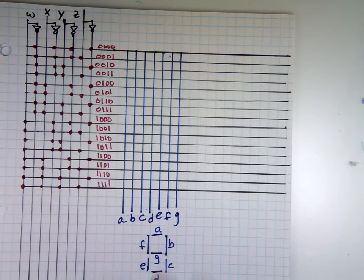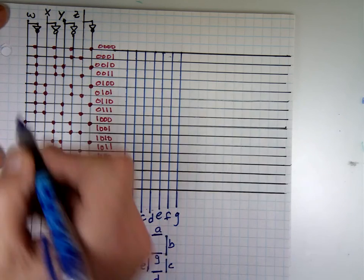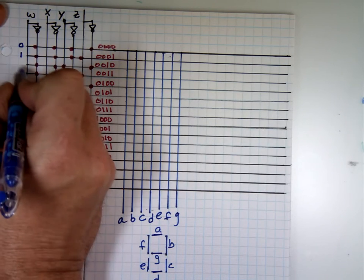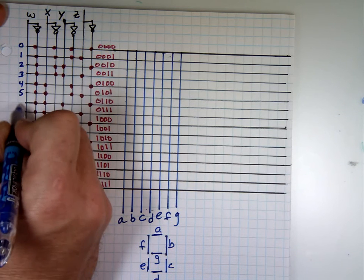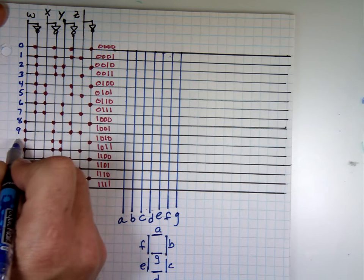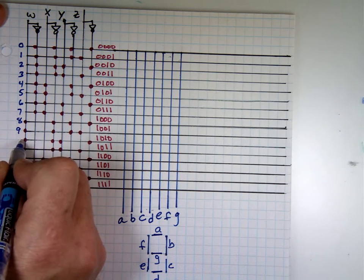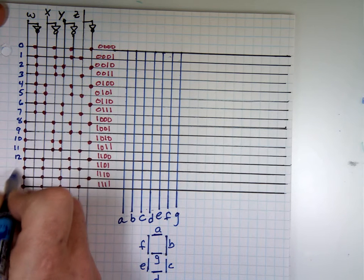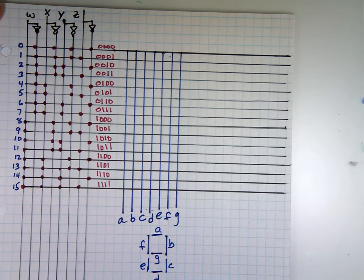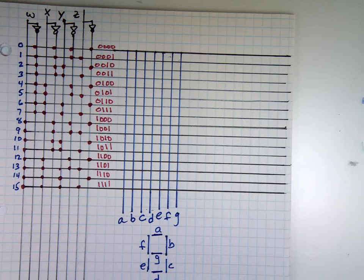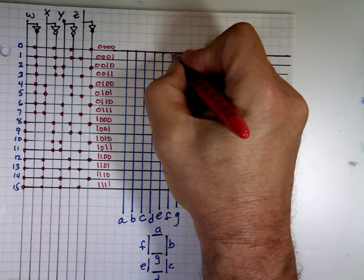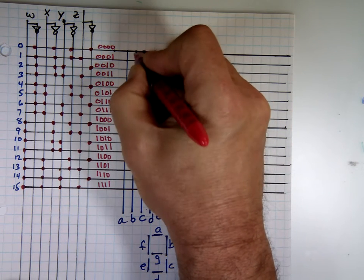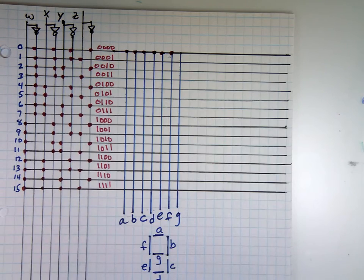Let's look at segment A. You want it to be on when the number is zero — this is equivalent to the digit zero. This covers digits zero through nine, and then ten through fifteen would be errors. For zero on the display, do you want A to be on? All segments are on except G. You connect all of these — where you connect it, that's a 1; where it's not connected, that's a 0. That's how they read the chart.